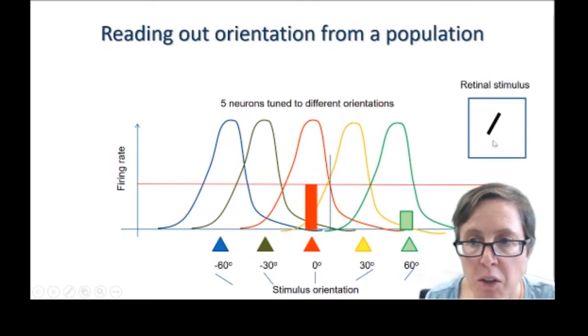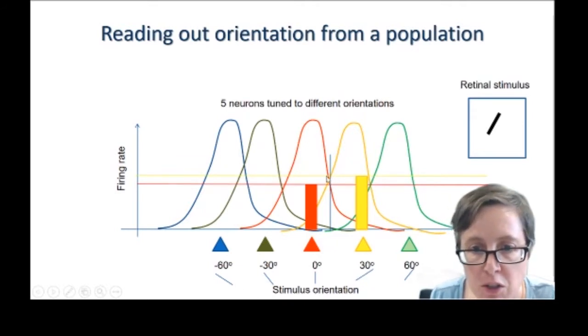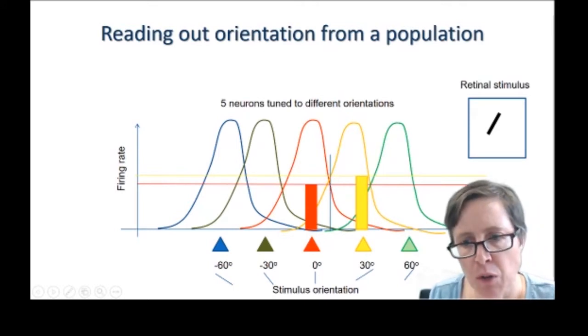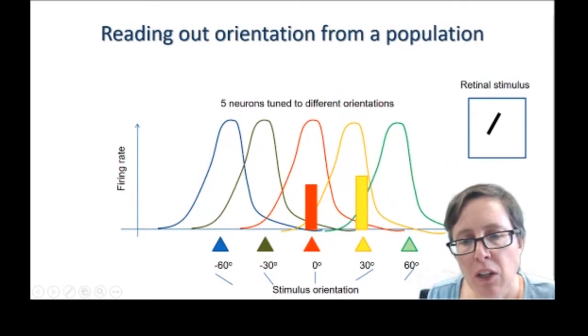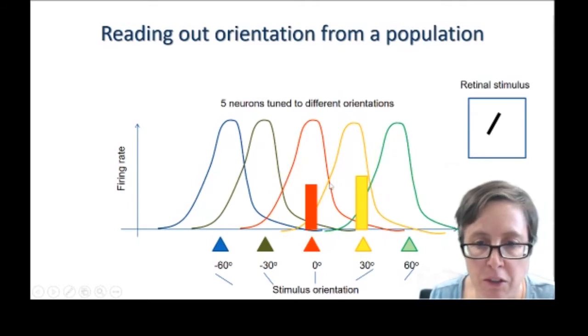Now let's think about the other orientation, plus 15 degrees. Remember the red cell is responding the same as it was for minus 15 degrees. So there's no change there. But now the difference is that the yellow neuron is now responding much more strongly than it was before. In fact, just a tiny bit stronger than the red neuron. And so by looking at that activity, the brain can tell that this must be plus 15 degrees instead of minus 15 degrees by looking at the activity of the whole population.